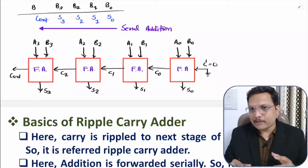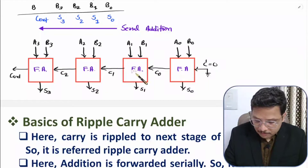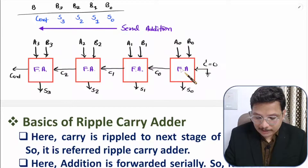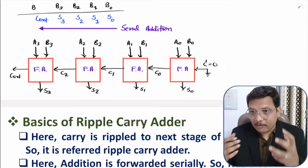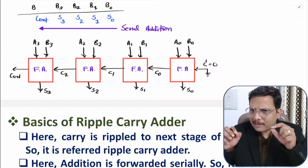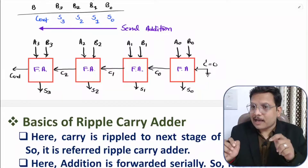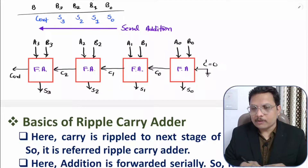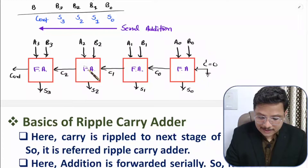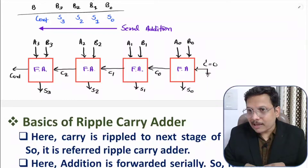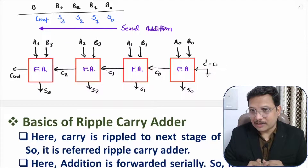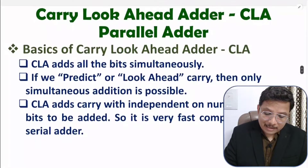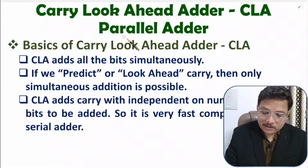In CLA, what we are doing is we are predicting the carry. Previously, this full adder was waiting for carry C0 from the previous full adder, and this full adder was waiting for carry C1. Now here we will be predicting all the carries — C0, C1, C2, C3 — in advance. Because of that, at the same time all the carries are given to the full adder and that results in output. So that is parallel execution. CLA is also referred to as parallel adder.